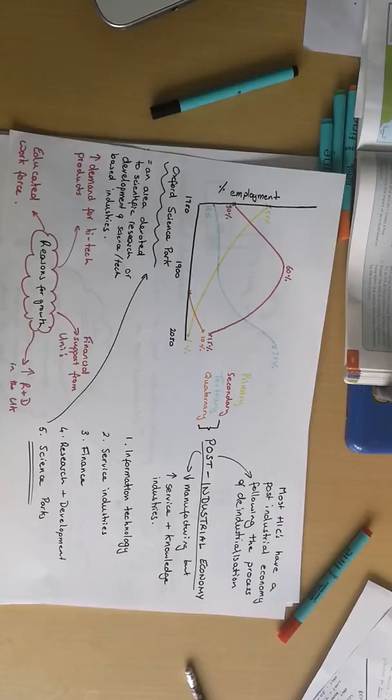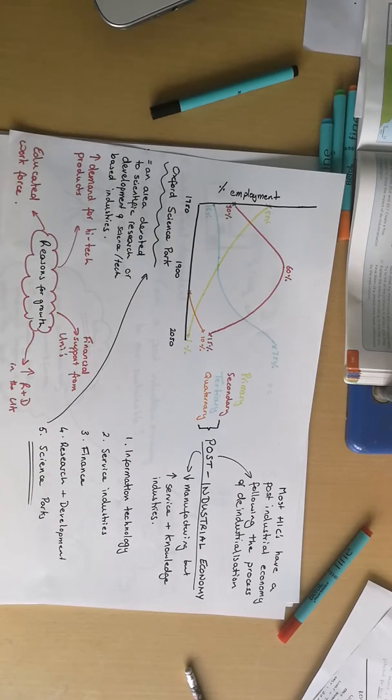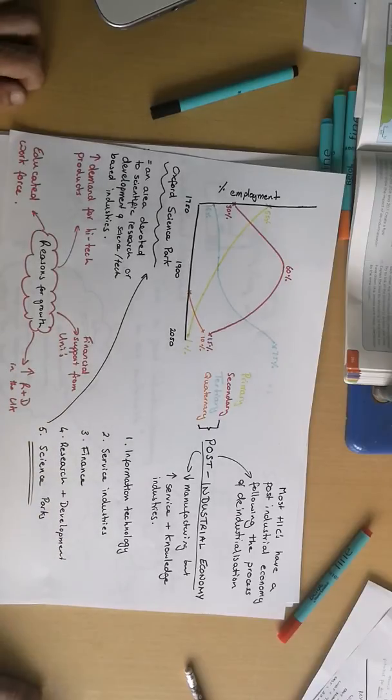We then have research and development. These industries involve research and developing new ideas and transforming them into workable products. We see, for example, that in a lot of manufacturing companies now, the research and development is done in the UK and then the actual production of that good is done in a low-income country. Dyson is a perfect example of that. UK company still has its headquarters of research and development in Malmesbury and Wiltshire, but does most of its manufacturing of those ideas in Malaysia.